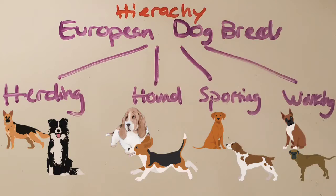This example is from my last video, so go check out the classifying quadrilaterals video for more detail. It goes from general European dog breeds down to more specific types. It shows that there are different categories like herding, hound, sporting, and working, and within those categories there are specific types of dogs that fall under each one.